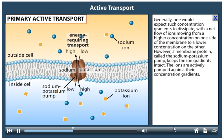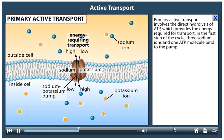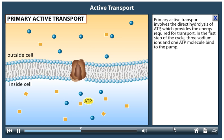The ions are actively pumped against their concentration gradients. Primary active transport involves the direct hydrolysis of ATP, which provides the energy required for transport.